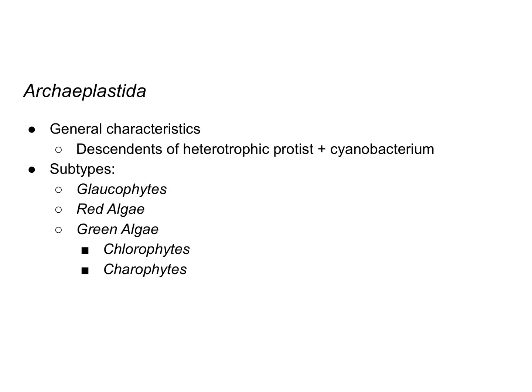In this video, we're going to talk about the protist supergroup Archaeplastida. The protists in the supergroup Archaeplastida are all descendants of a heterotrophic protist that formed a symbiotic relationship with a cyanobacterium — photosynthetic bacteria. This is likely a case of endosymbiosis in which the protist, by taking in the cyanobacterium, was now able to perform photosynthesis.